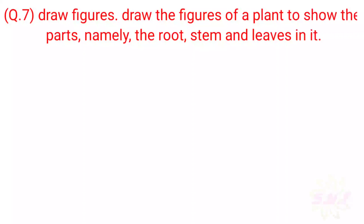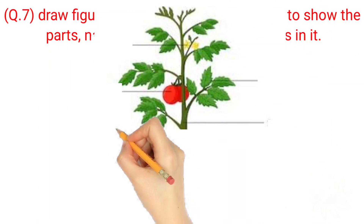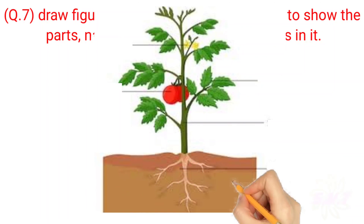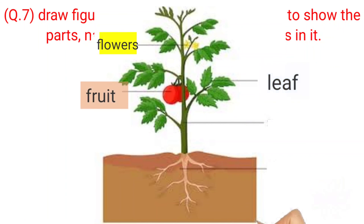Question 7 & 8: Draw the figures. Draw the figure of a plant showing its parts — namely the root, stem, and leaves. Parts labeled: Flowers, Fruit, Leaf, Stem, Root.